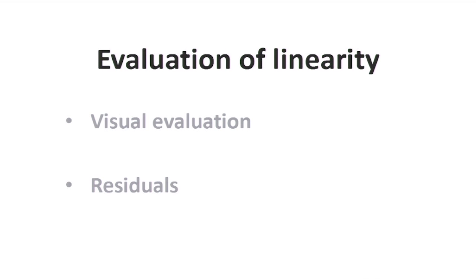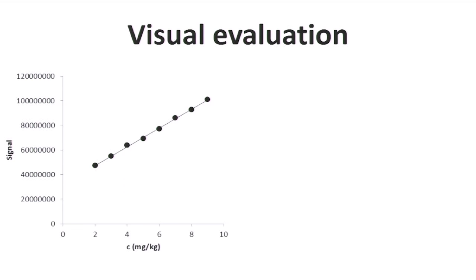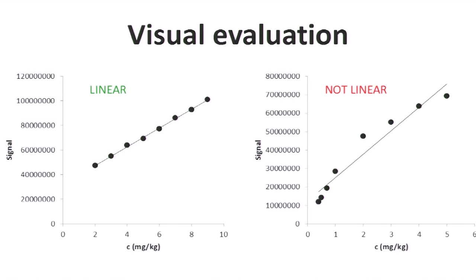The simplest method to evaluate the linearity is the visual evaluation of the calibration graph, which is also suggested by several validation guidelines. From the calibration graph, where we have plotted the signals and the concentration of analyte in the calibration samples, we can clearly see the difference between a linear and a not-linear calibration graph.